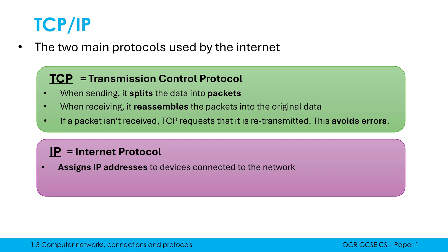IP stands for Internet Protocol. Its most well-known job is to assign IP addresses to the devices connected to the network. Now, IP addresses are so important that they're going to get their own video a bit further down in the playlist. A second job which IP does is route calculations — it will determine the best route for the packets to travel through, and it will be running on a router because it's the router that has to decide what route to send the packets along.